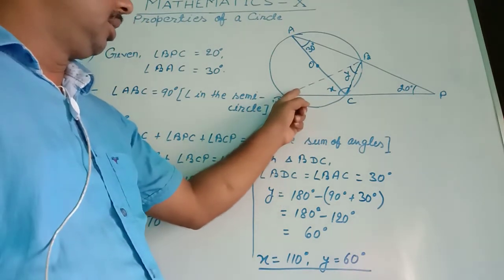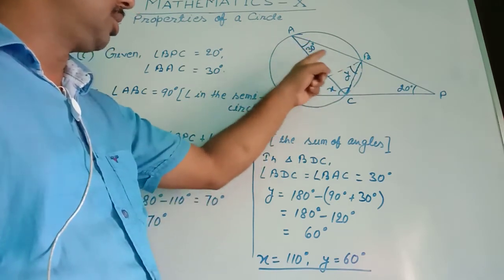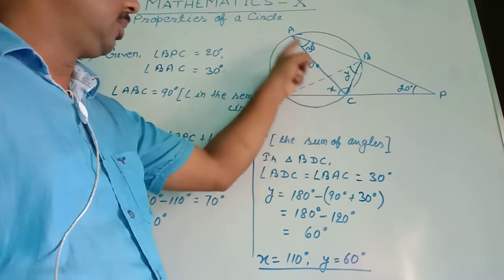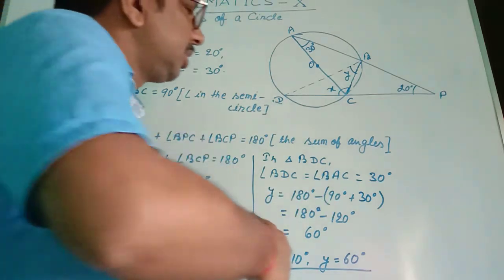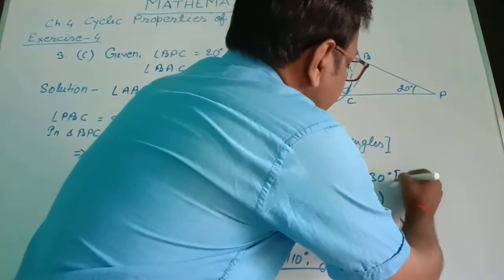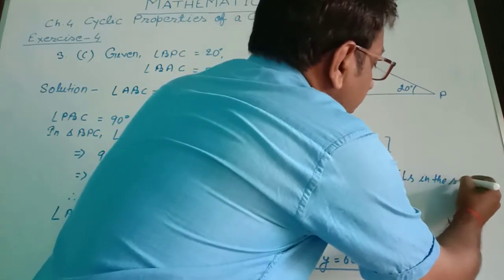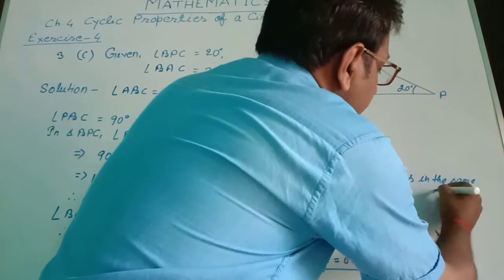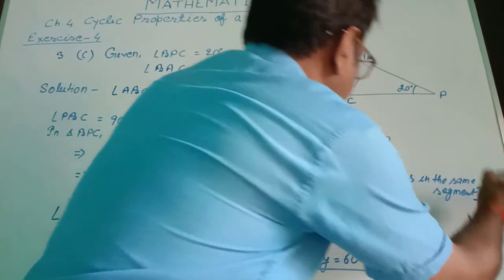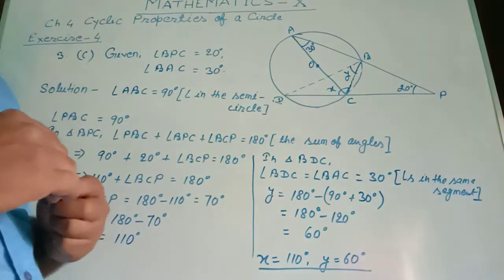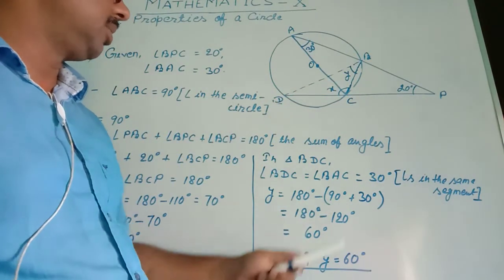In triangle BDC, angle BDC equals angle BAC equals 30 degrees, because angles in the same segment are equal. Here we note the reason: angles in the same segment. Y equals 180 minus the sum of the other two angles in triangle BDC, which are 90 degrees and 30 degrees.